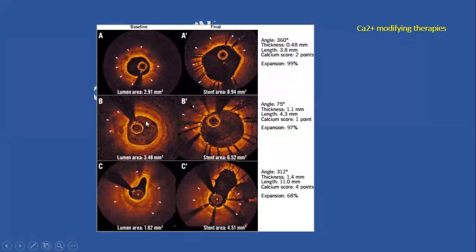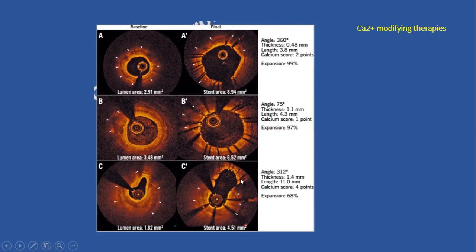Case B shows a heavily calcified nodule, quite thick at 1.1 mm, but short and only about 75 degrees. OCT score was one, and angioplasty achieved 97% expansion — again a very good result. Case C is very calcified with thick calcium of 1.4 mm and length of 11 mm, giving an OCT score of four. As you can see from the lumen cross-section, there is significant under-expansion of the stent with small cross-sectional area, and expansion percentage was only 68% — a very unsatisfactory result.